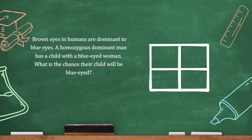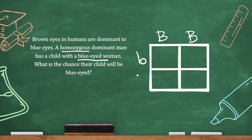Brown eyes in humans are dominant to blue eyes. A homozygous dominant man has a child with a blue-eyed woman. What is the chance their child will be blue-eyed? He's homozygous dominant, so both alleles are the same: big B, big B. Since blue eyes is recessive, for that trait to be expressed both alleles need to be recessive. Completing the Punnett square: big B / little b, big B / little b, big B / little b, big B / little b.